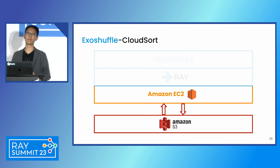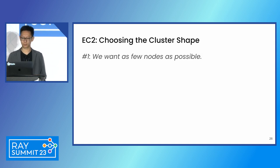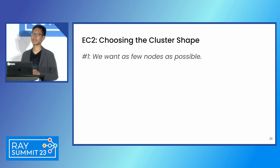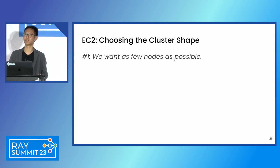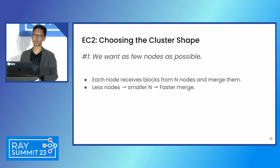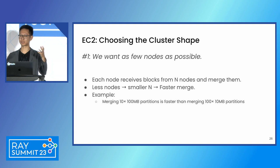Let's go bottom-up from that stack and first talk about how we selected the hardware configuration for the CloudSort record. We thought of a few principles when choosing the EC2 cluster shape. First, we want to use as few nodes as possible. The goal of this CloudSort benchmark is to find the cheapest way to sort 100 terabytes. With fewer nodes, every node receives blocks from fewer nodes and merges them together — less nodes means faster merge. For example, merging 100-megabyte blocks is faster than merging 100 blocks each of only 10 megabytes.